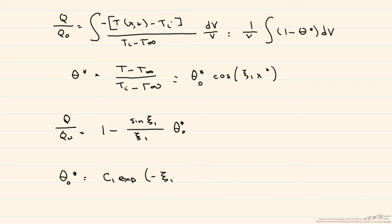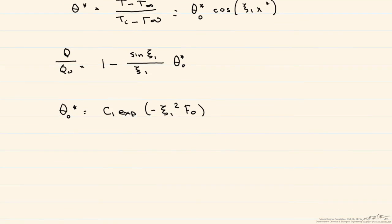So the total energy transfer for a long cylinder or sphere is done the exact same way. We do use the same normalization term, q0, but remember that volume is going to change.